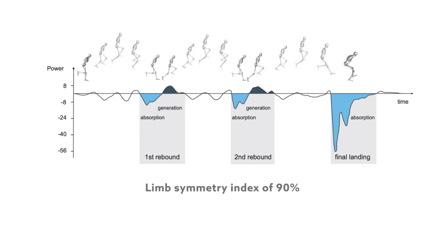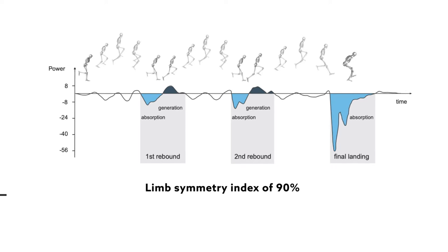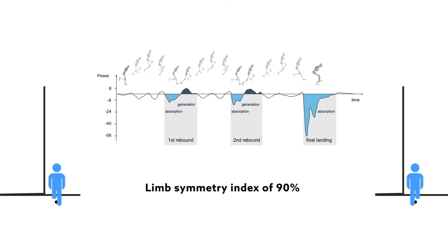A limb symmetry index of 90% is the recommended cutoff for safe return to sport. Limb symmetry refers to how closely an athlete's repaired limb can match the performance of their other limb.